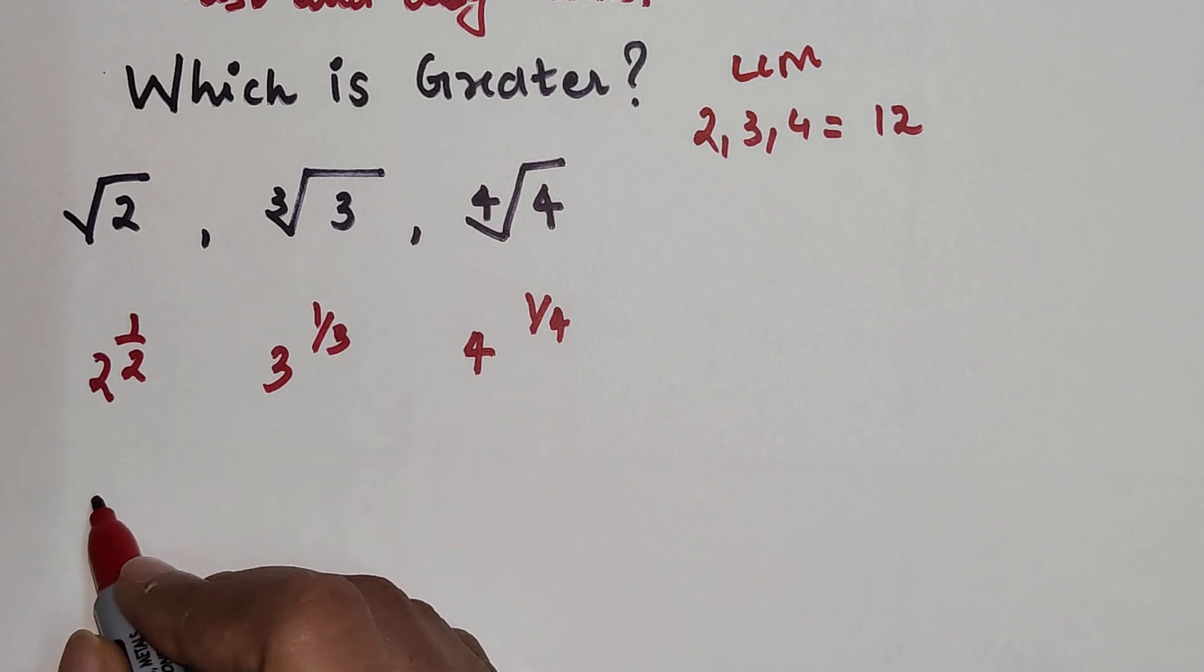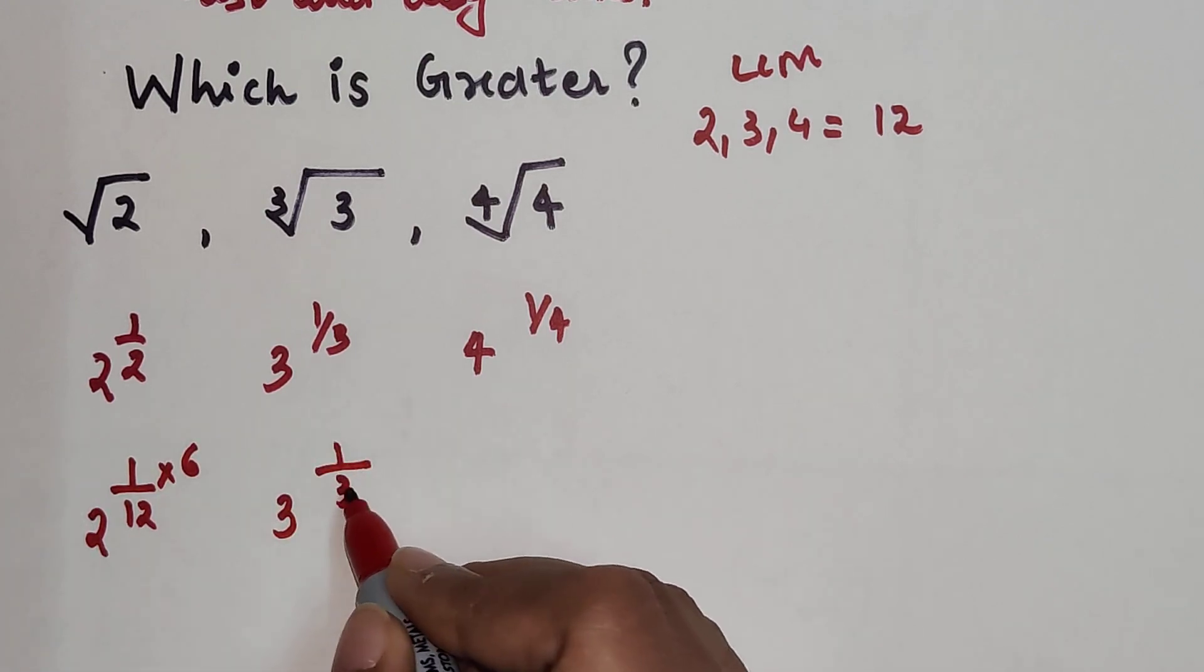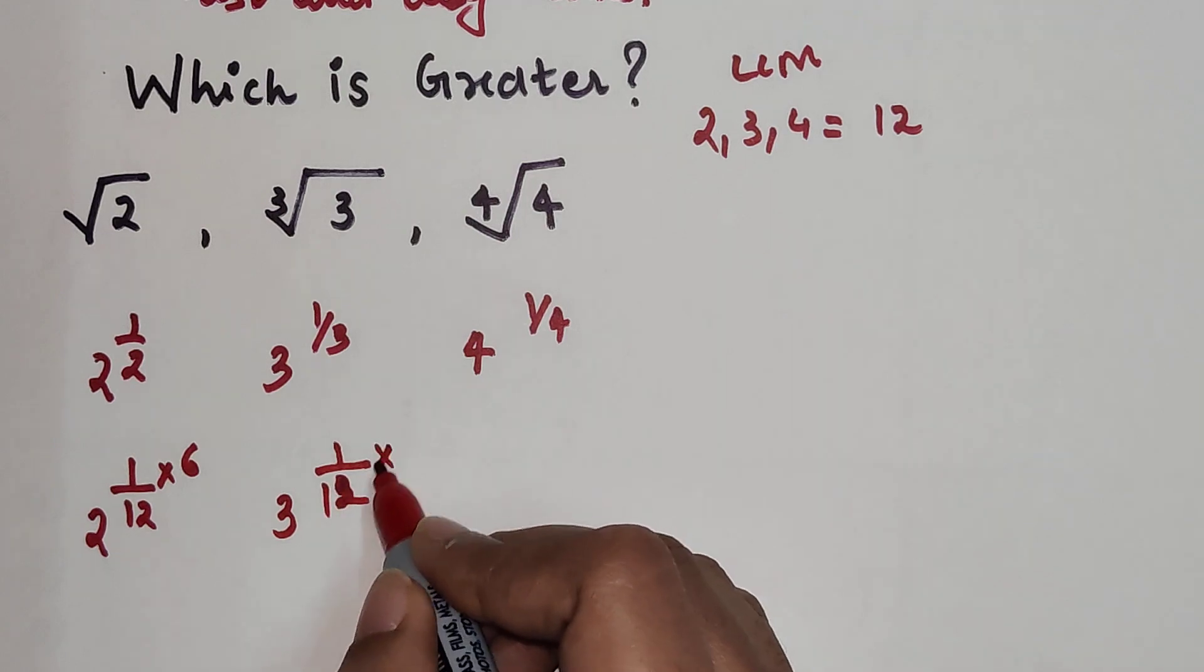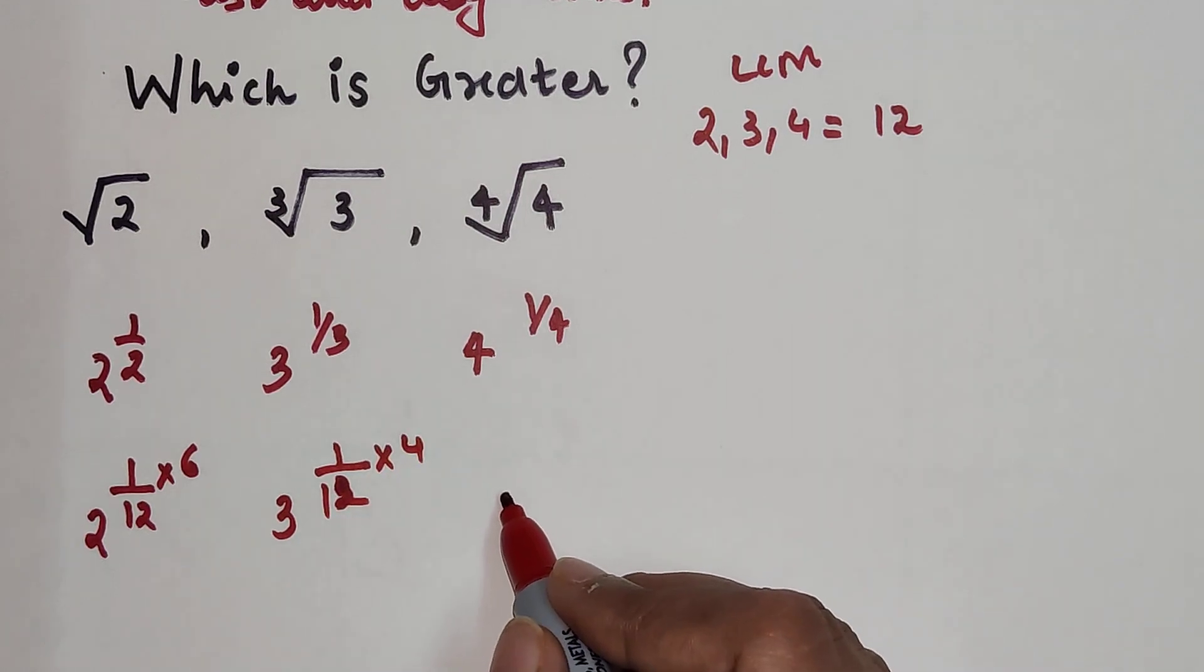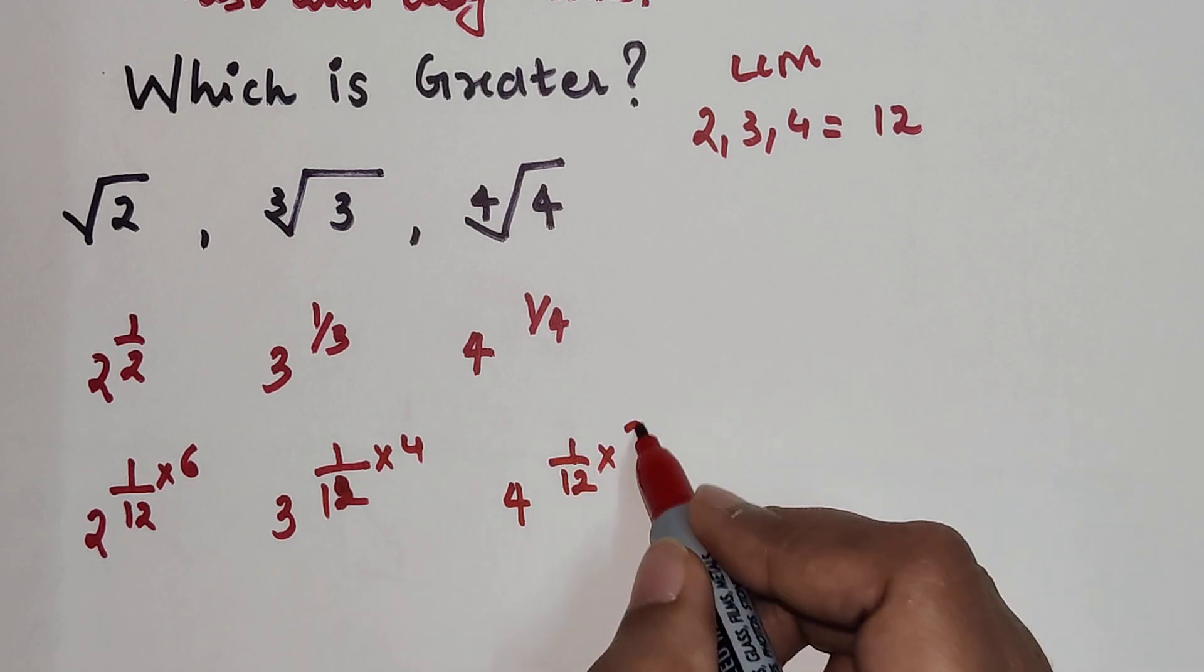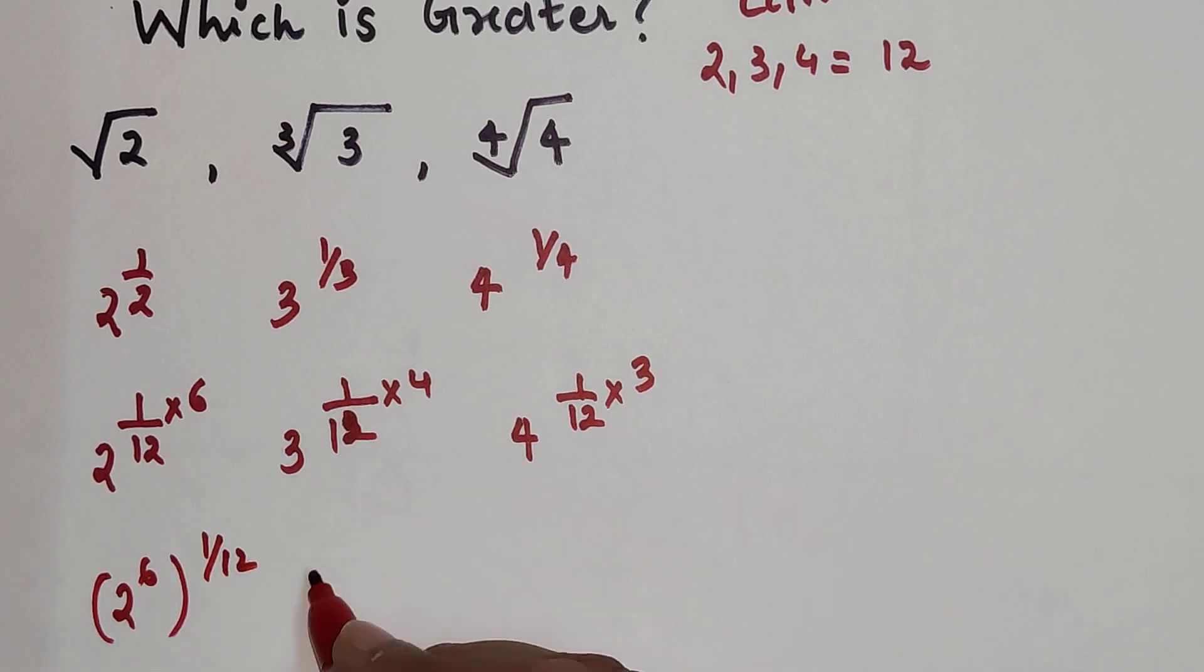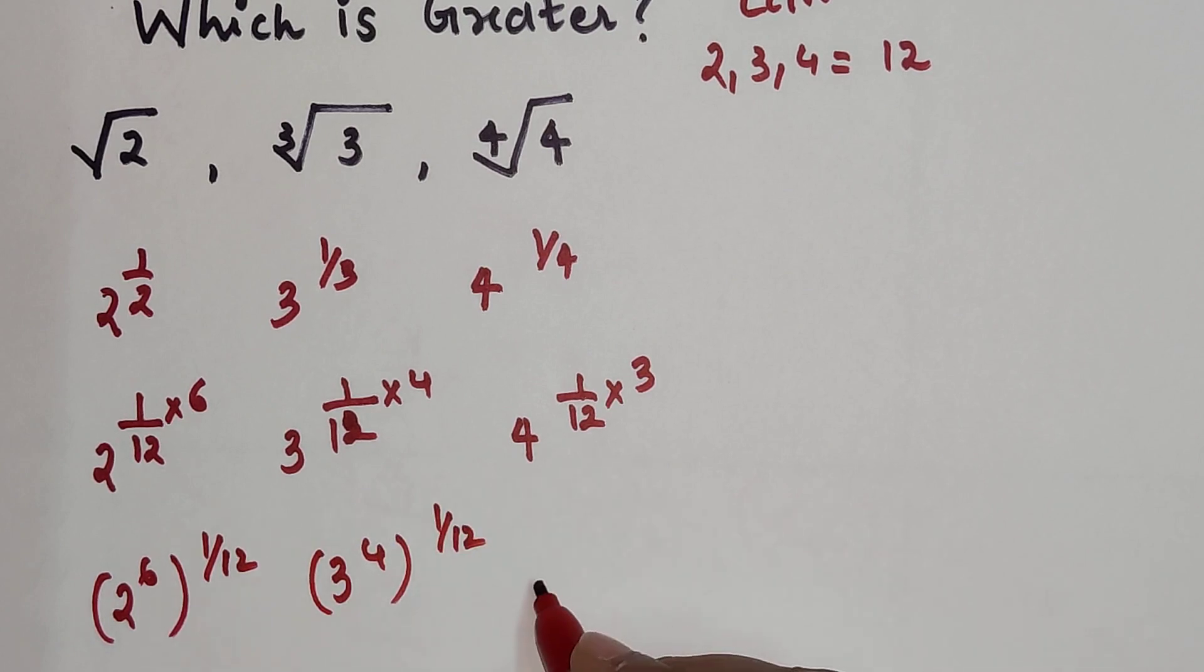Now in order to make this 12, we will keep it as 1/12 times 6. This is 3 raised to 1/12 times 4, and this will be 4 raised to 1/12 times 3. Let's write this like: 2 raised to 6, the whole raised to 1/12; 3 raised to 4, the whole raised to 1/12; and 4 raised to 3, the whole raised to 1/12.